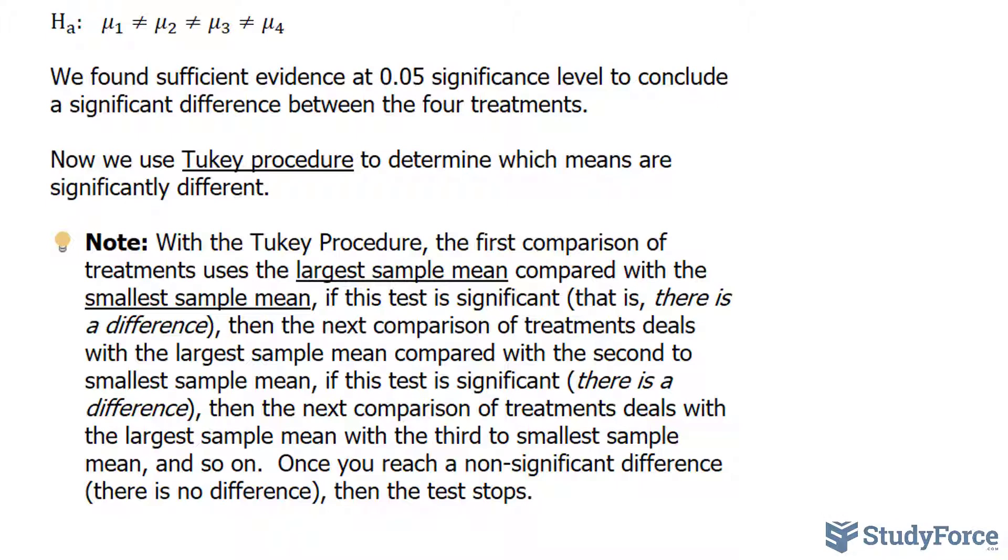With the Tukey procedure, the first comparison of treatments uses the largest sample mean compared with the smallest sample mean. If this test is significant, you make another comparison of the largest with the second smallest sample mean. If there is a significant test there, you continue, where the next comparison deals with the largest sample mean with the third smallest sample mean and so on. You have to cycle through as many times until you finally reach an insignificant difference between the two groups.